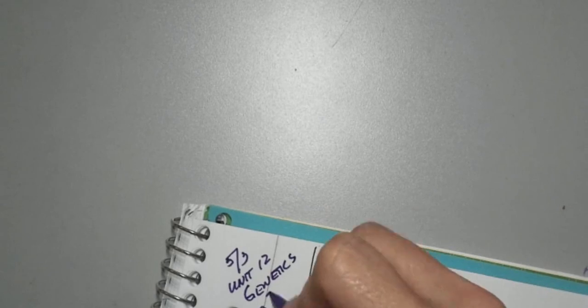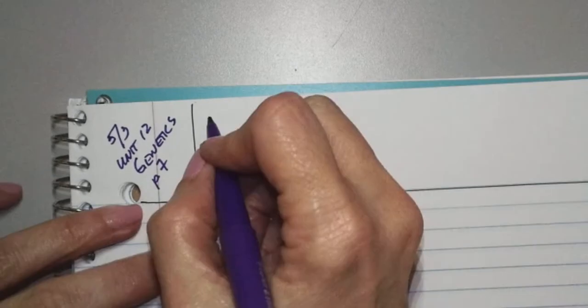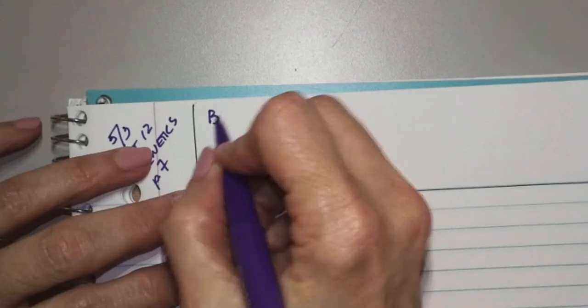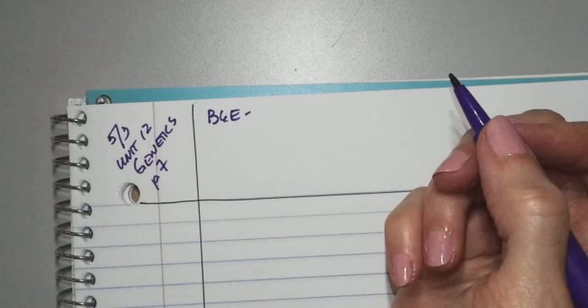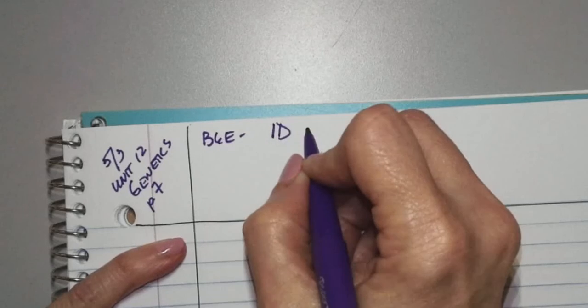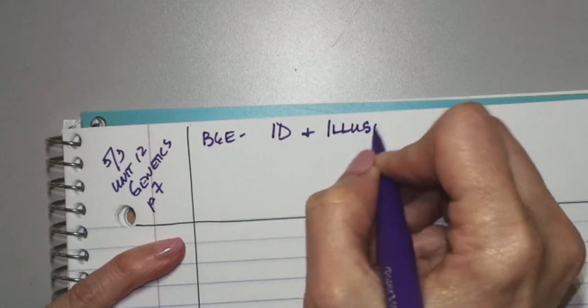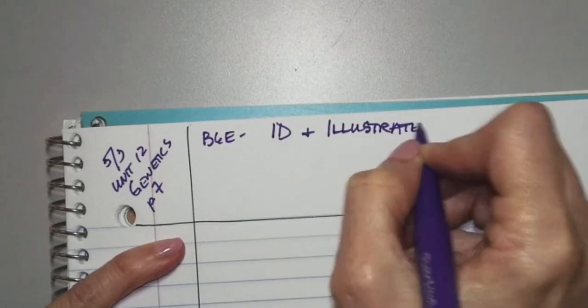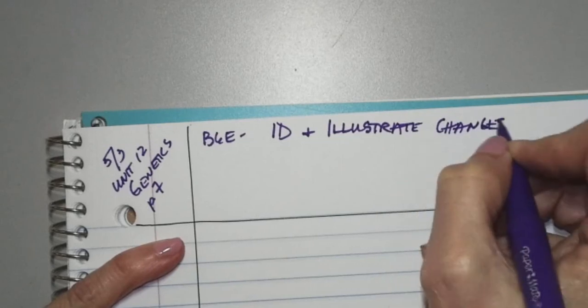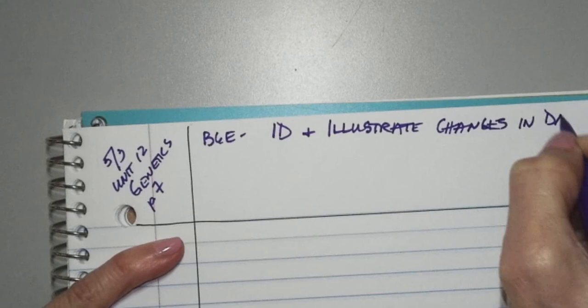So in this unit, what we're talking about is B6E. My page of notes is really crampacked full, so I'm going to split this into two days. B6E says that you're going to identify and illustrate changes in DNA.